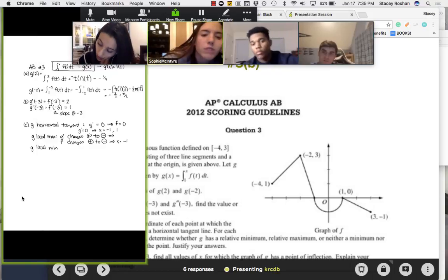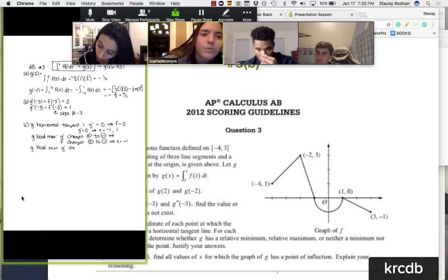G prime changes from negative to positive, which happens where? F changes from negative to positive, which happens where?